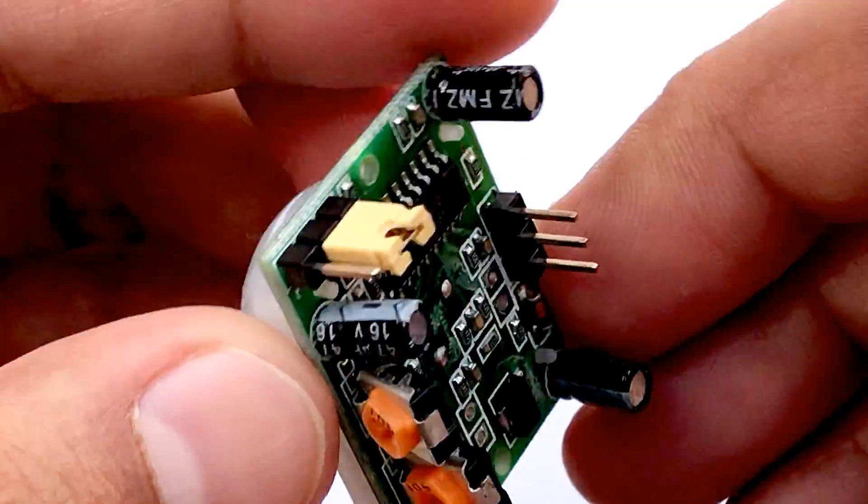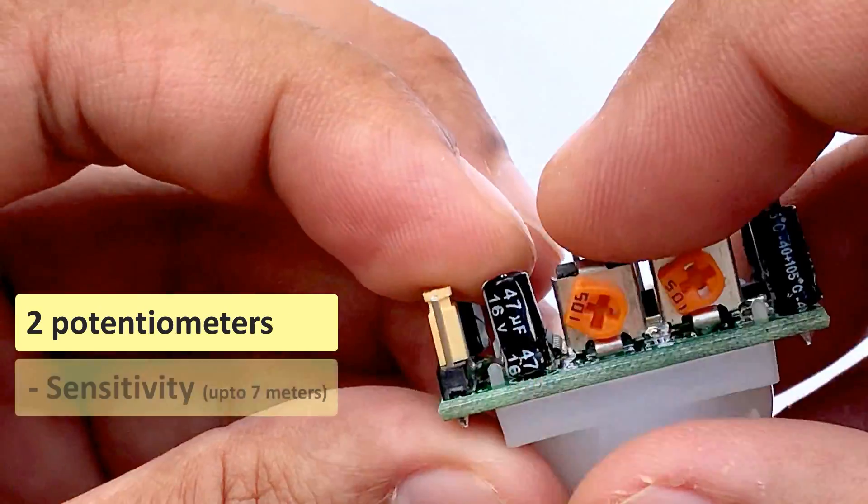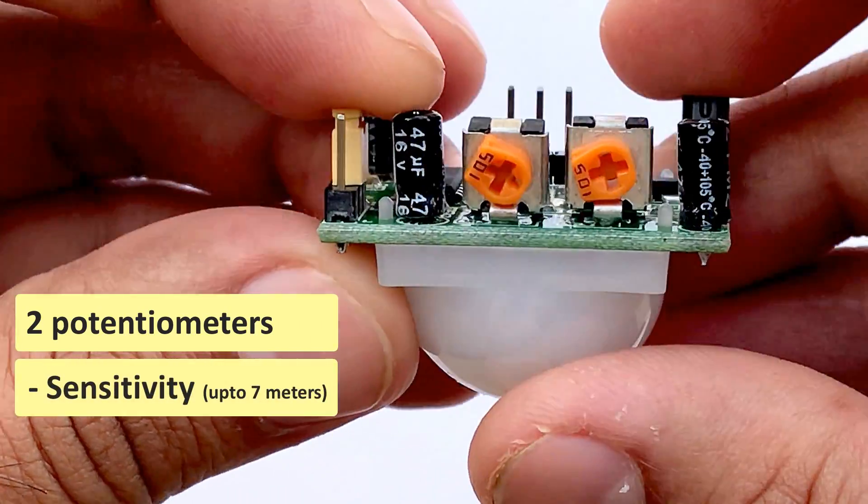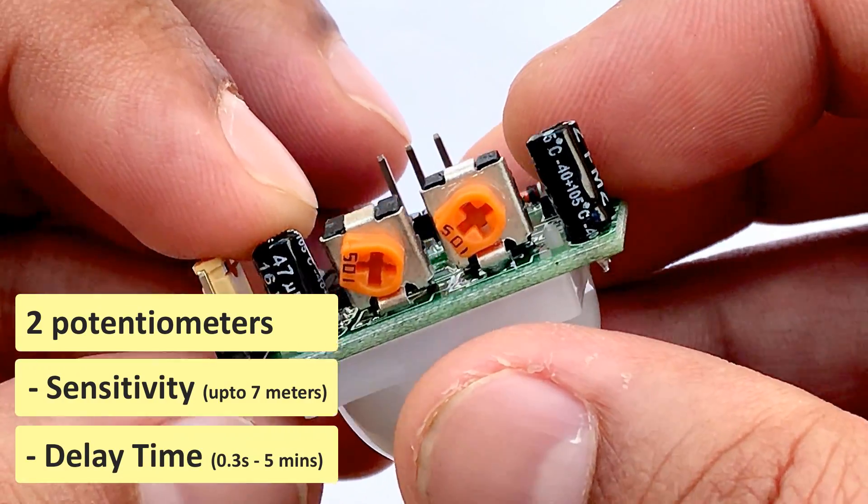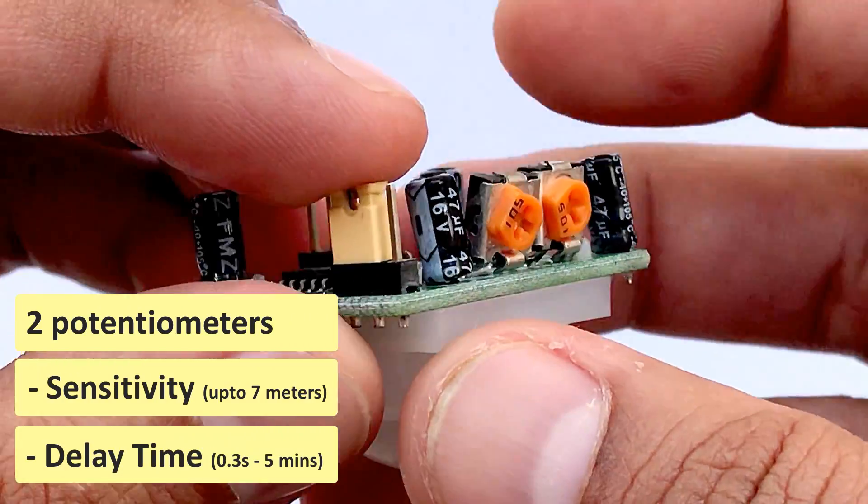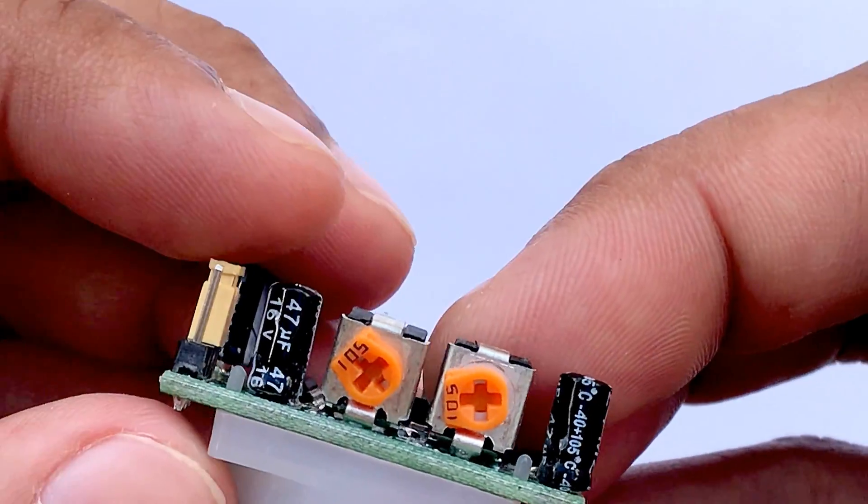The module has two potentiometers, one to adjust the sensitivity, which is up to 7 meters, and the other one to adjust the time for which the output signal should stay high when an object is detected. It ranges from 0.3 seconds to 5 minutes.